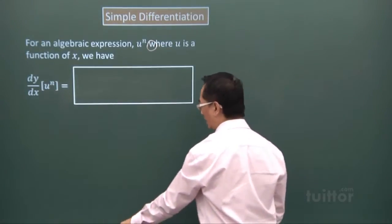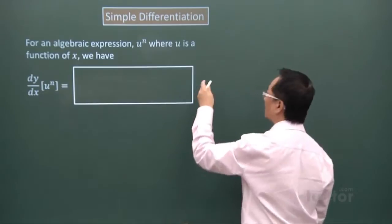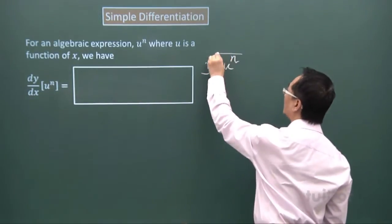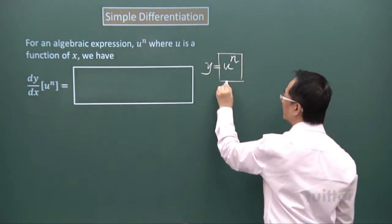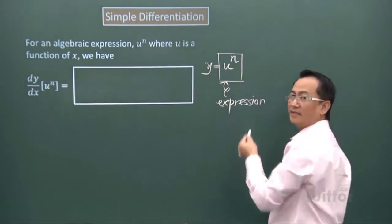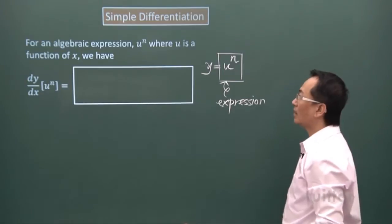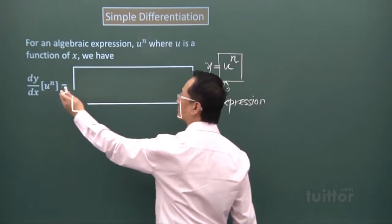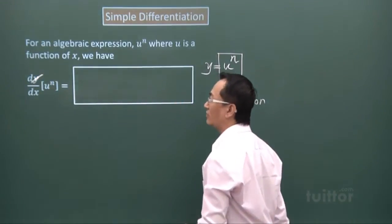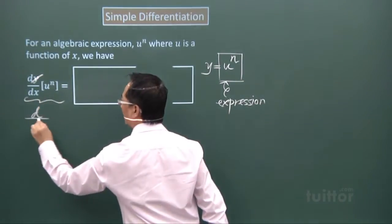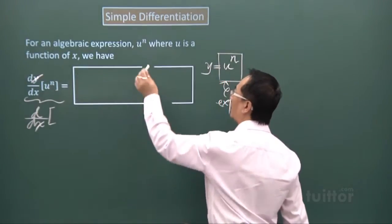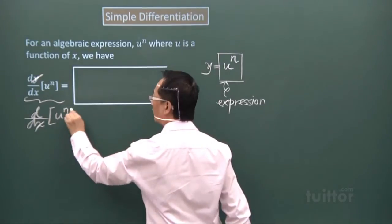When you are not given a function like in the previous case, y equals u to the power of n, but merely given an algebraic expression—if you consider the whole part here, then it's a function or an equation. Because the expression is given, the way you write this should not be dy/dx. The actual symbol would be d/dx in square brackets, whatever expression you need to differentiate, which is your u to the power of n.